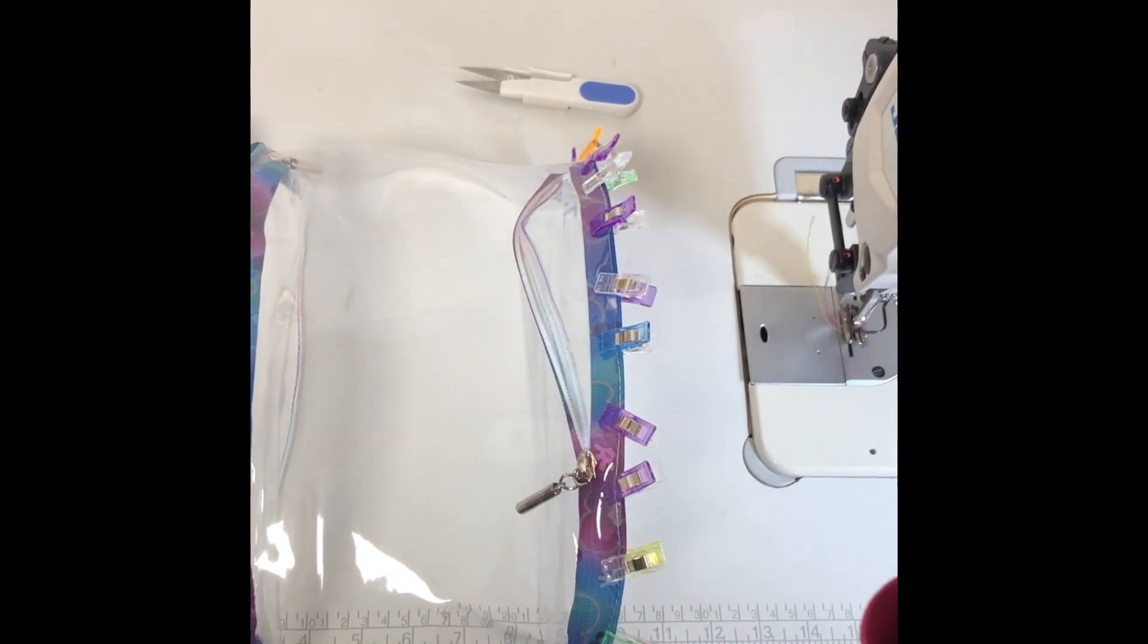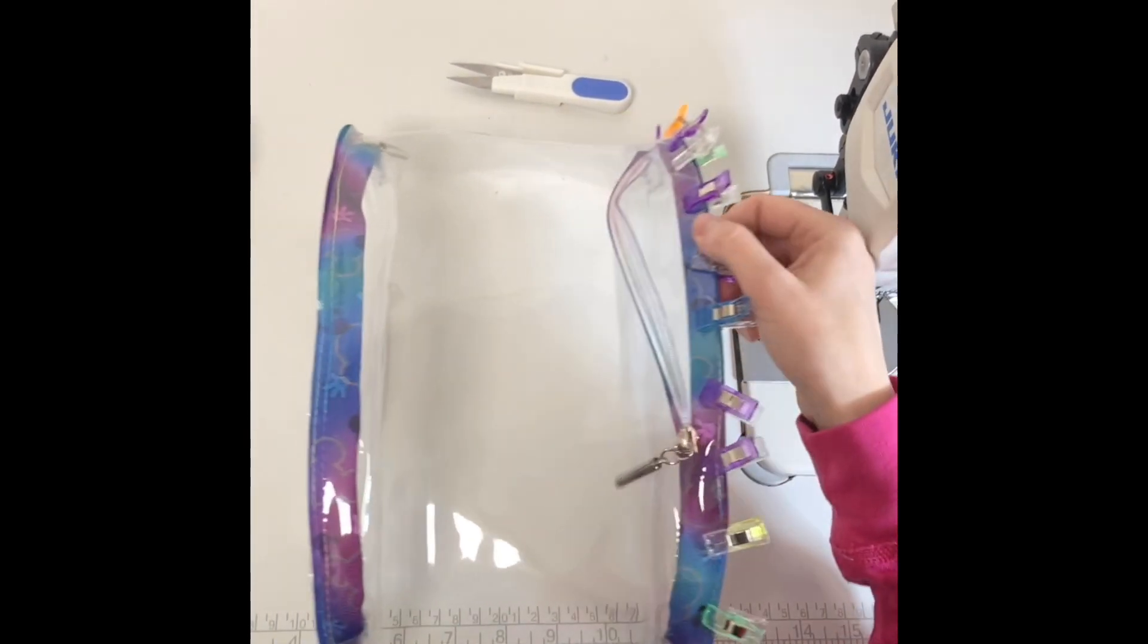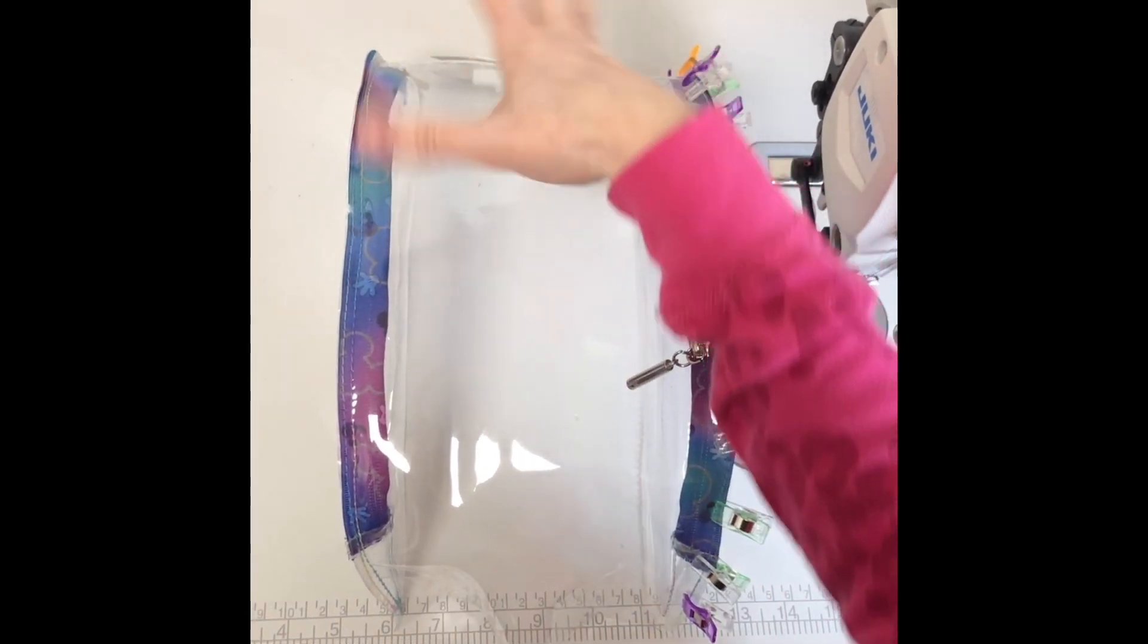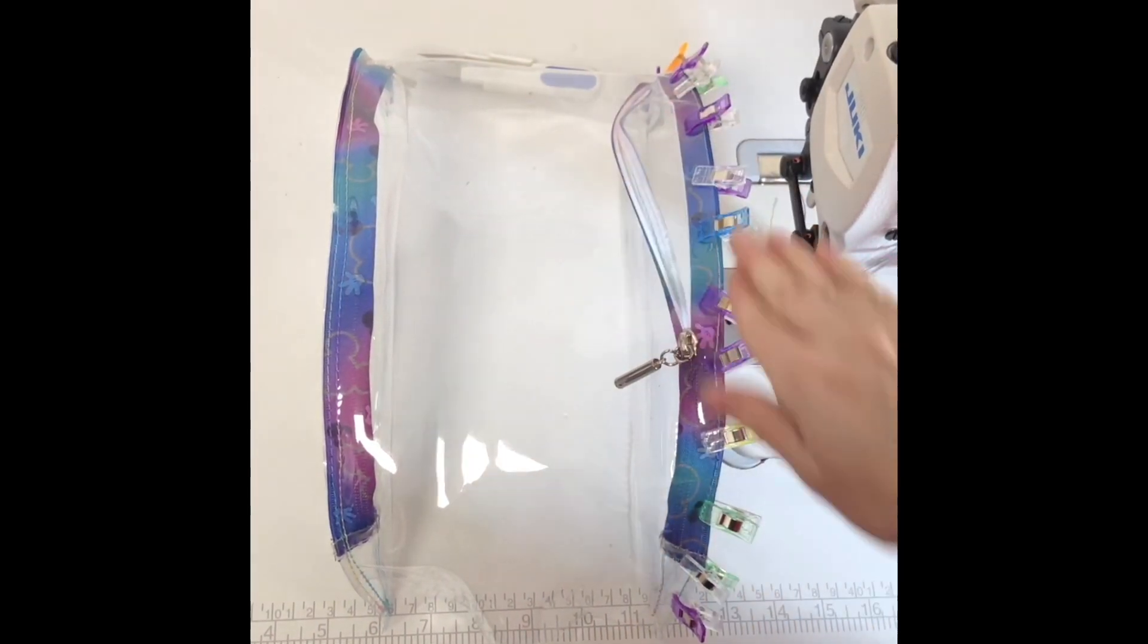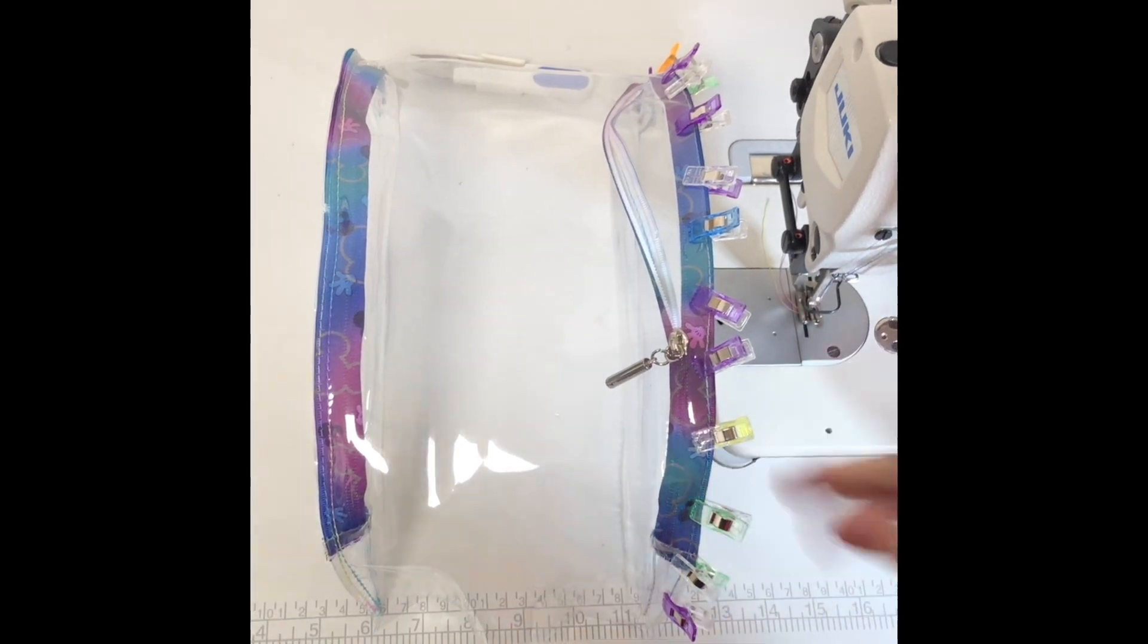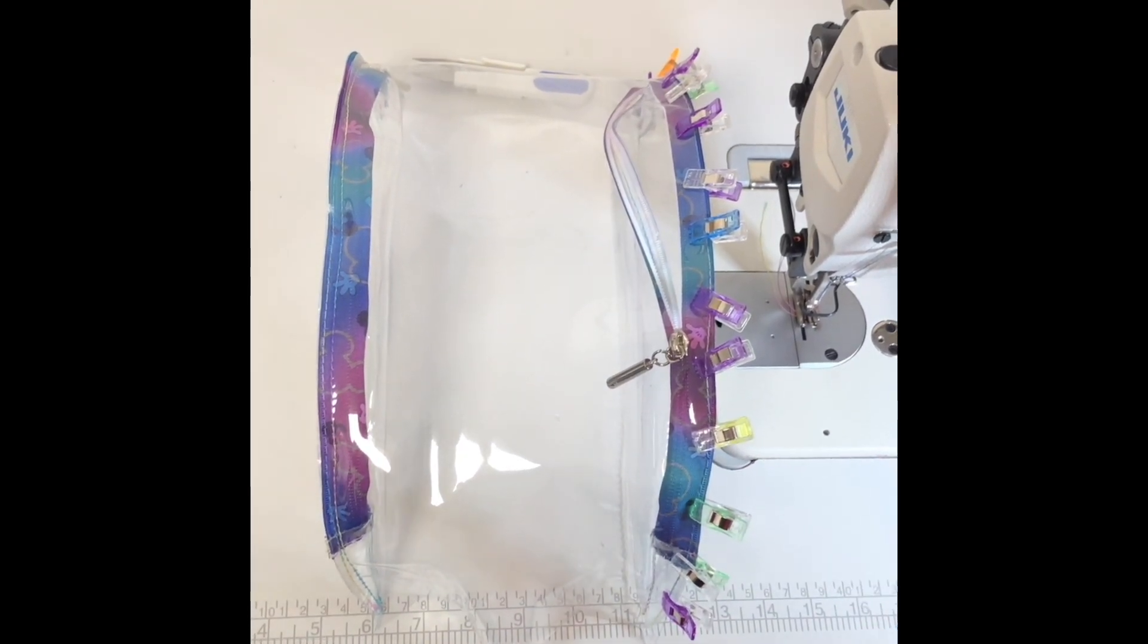So I found that if I can blast it with heat then it gets really soft and I'm able to easily manipulate it with my hands as I'm sewing. So you might want to try that if you run into the same problem.